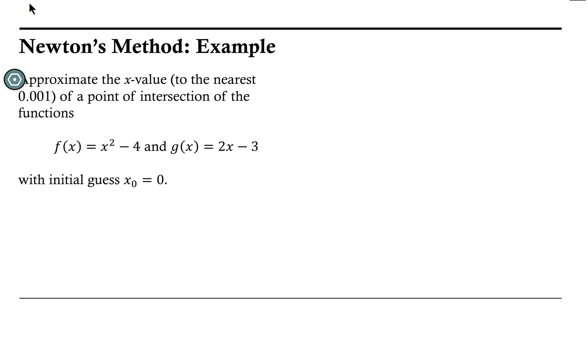Let's take a look at using Newton's method to approximate the x-value of a point of intersection of two functions. The functions we're looking at are f(x) = x² - 4 and g(x) = 2x - 3. We will be using an initial guess of x₀ = 0 when we apply Newton's method.